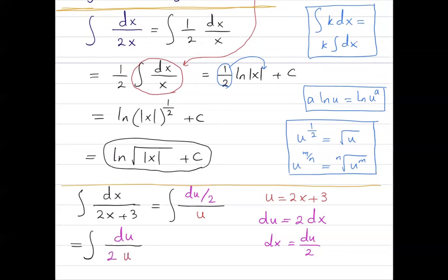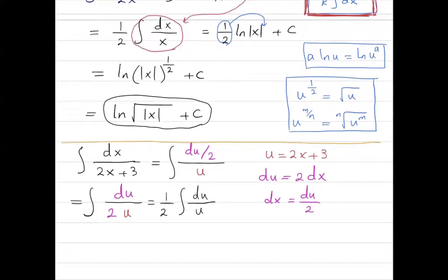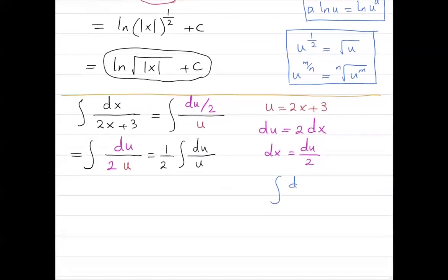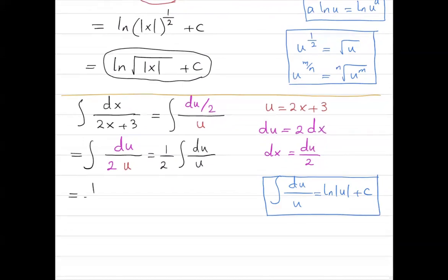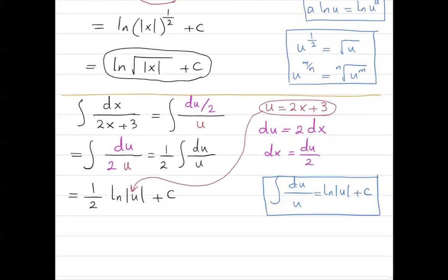As we saw before, if you have k as a coefficient inside your integral, you can write it in front. So this integral can be written as one-half times the integral of du divided by u. The integral of du divided by u is ln of the absolute value of u plus C. So your integral becomes one-half times ln of the absolute value of u plus C. Since u is 2x plus 3, you get one-half times ln of the absolute value of 2x plus 3 plus C.